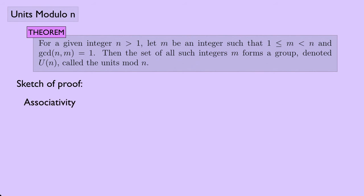Next, associativity is straightforward because U(n) is a subset of Z(n), and Z(n) under multiplication mod n is associative. So U(n) inherits associativity.